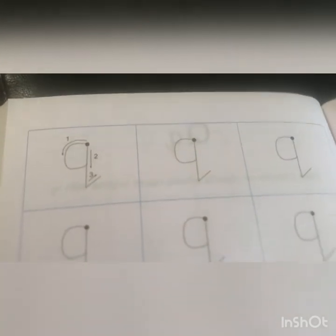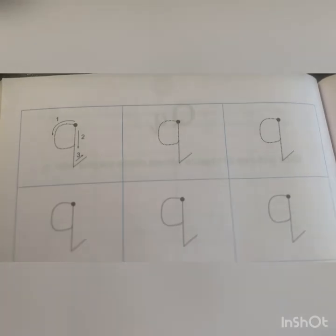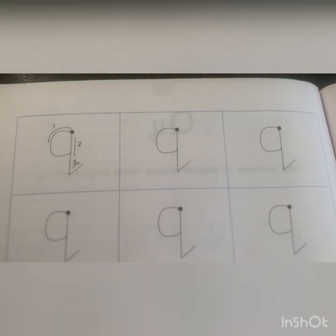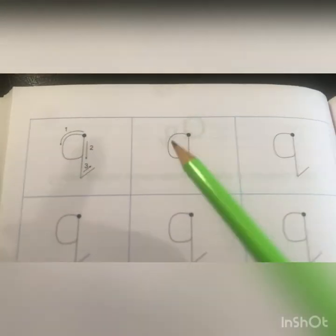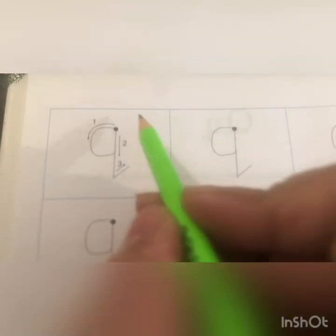Now children, it is home fun time. Open your pencil time English book to page number 96 and we are going to trace letter small Q. Okay, so come on, let's begin.